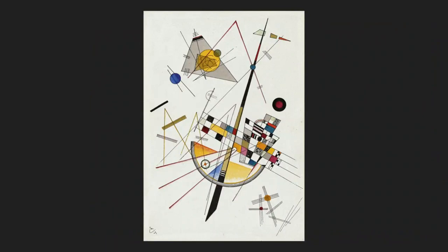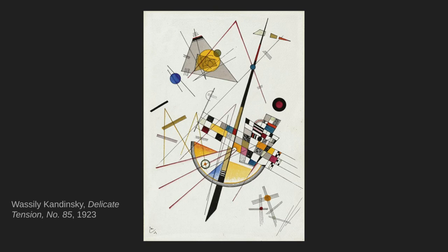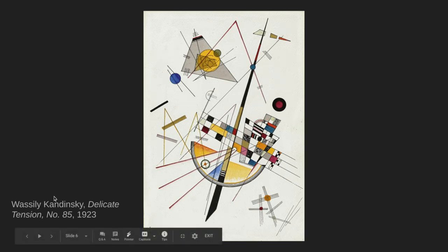Now is this artwork representational or non-representational? This artwork is called Delicate Tension Number 85, by the artist Vasily Kandinsky, and it is non-representational. Some people do see images in this artwork — I've heard people see a sword, a bird, or a fish. However, because everyone sees different things, Kandinsky wasn't trying to get everyone to see that one thing. Instead, our brains are just trying to make sense of what they are seeing.